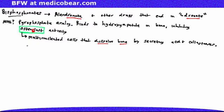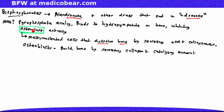This is opposed to the osteoblasts, which build bone by secreting collagen and catalyzing mineralization. That little B in osteoblasts stands for build, whereas the osteoclasts with the C dissolve or crush bone. Bisphosphonates inhibit osteoclast activity, thereby keeping bones from dissolving.